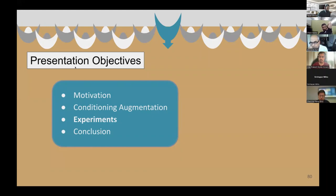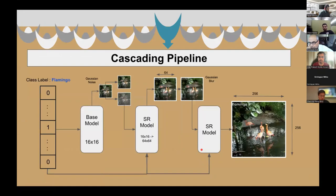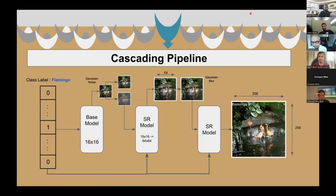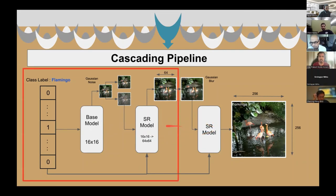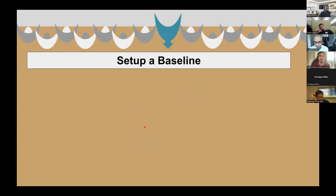Next are the experimental results that the authors were doing on the cascading pipeline. Here is the cascading pipeline architecture, consisting of one base model and two super-resolution models. They are doing experiments on the 64x64 cascaded base model, which consists of one base model and one super-resolution model. Before doing that, they are setting up a strong baseline to compare the results. Here is the setup of the 64x64 class-conditioned baseline model.